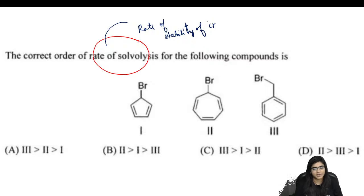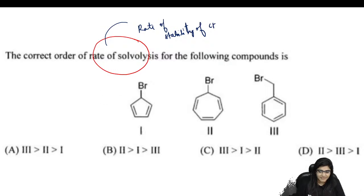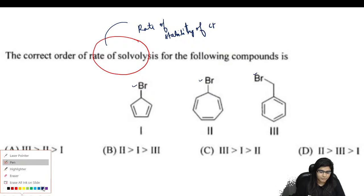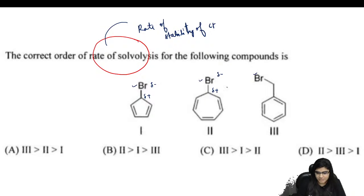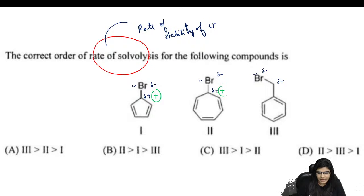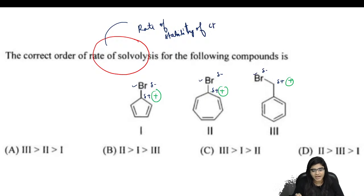Now, if I have Br on each compound — since Br is more electronegative than carbon, there is going to be a delta negative charge on Br and delta positive charge on carbon. So finally what is going to happen is formation of a carbocation at each position. Now we have to check the stability of these carbocations.